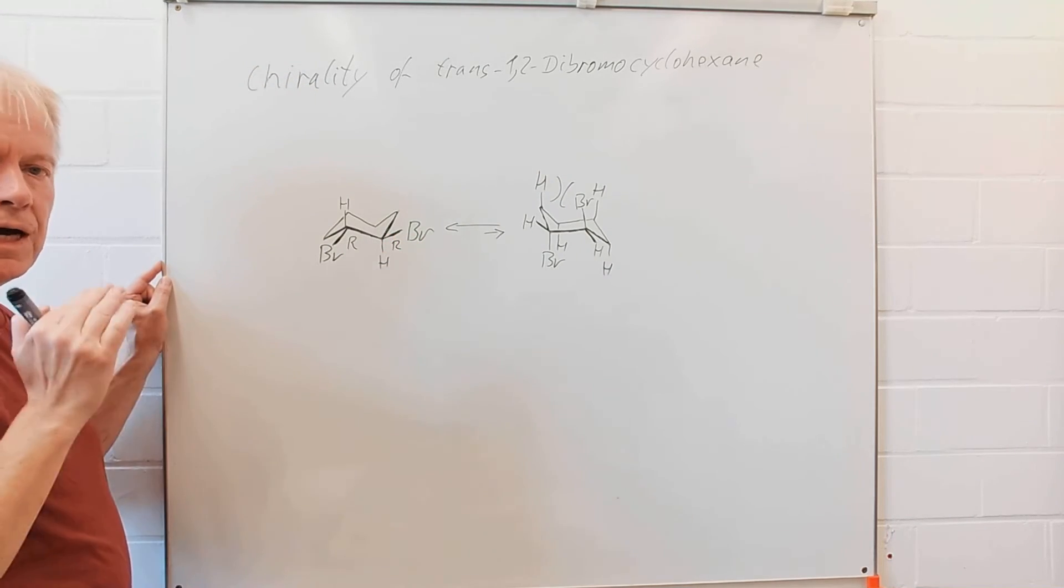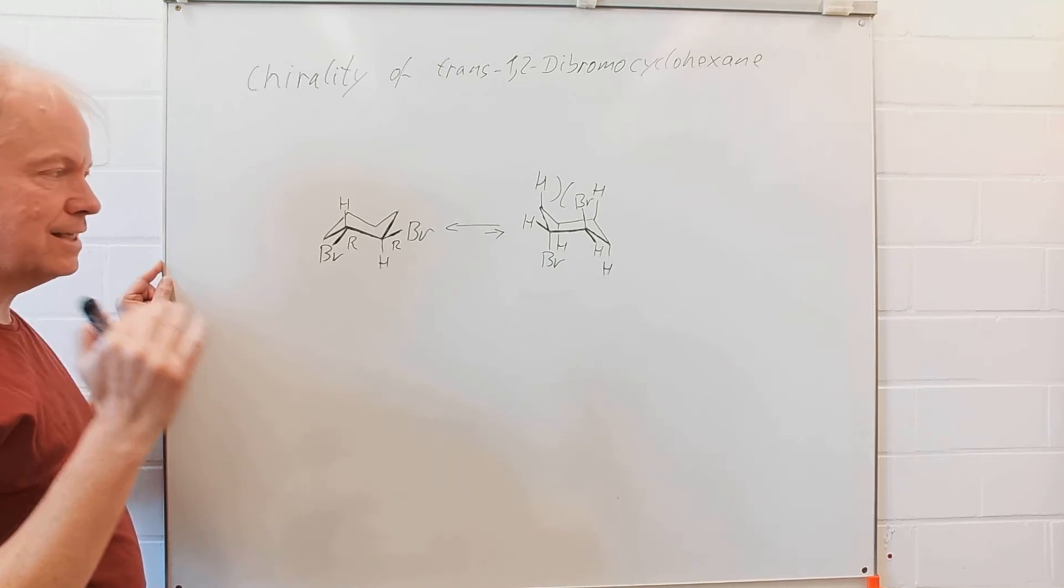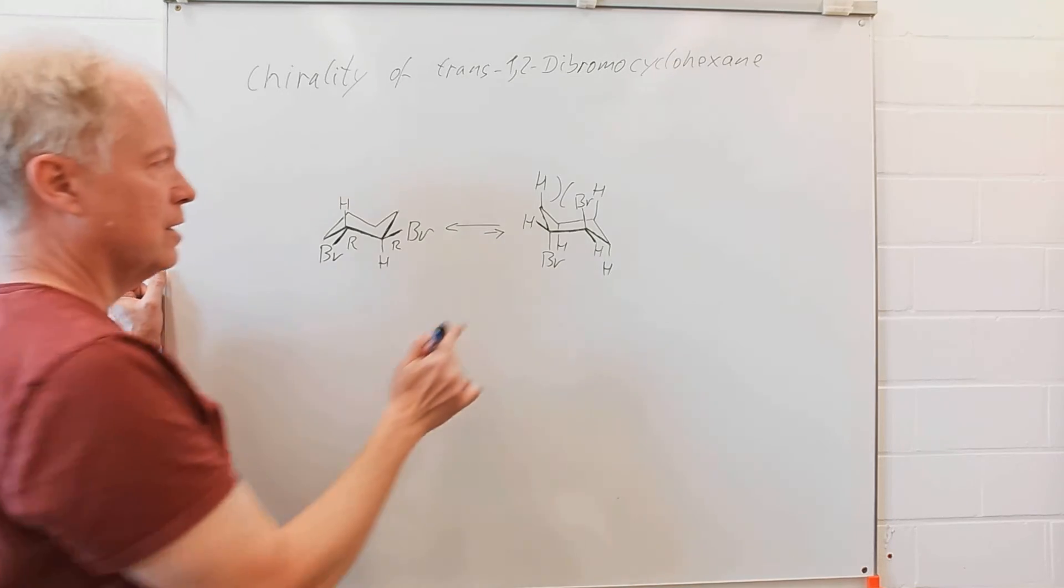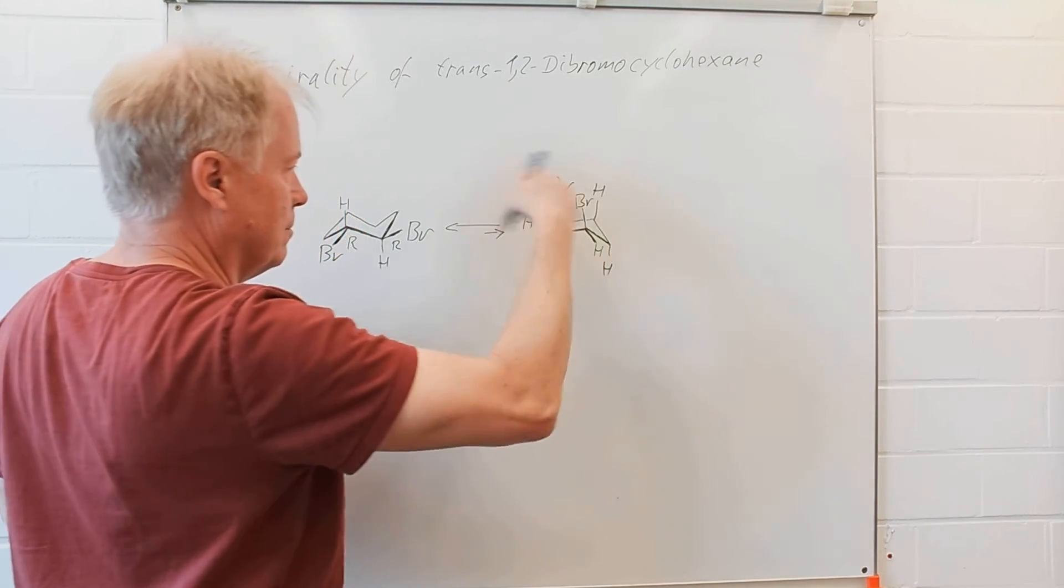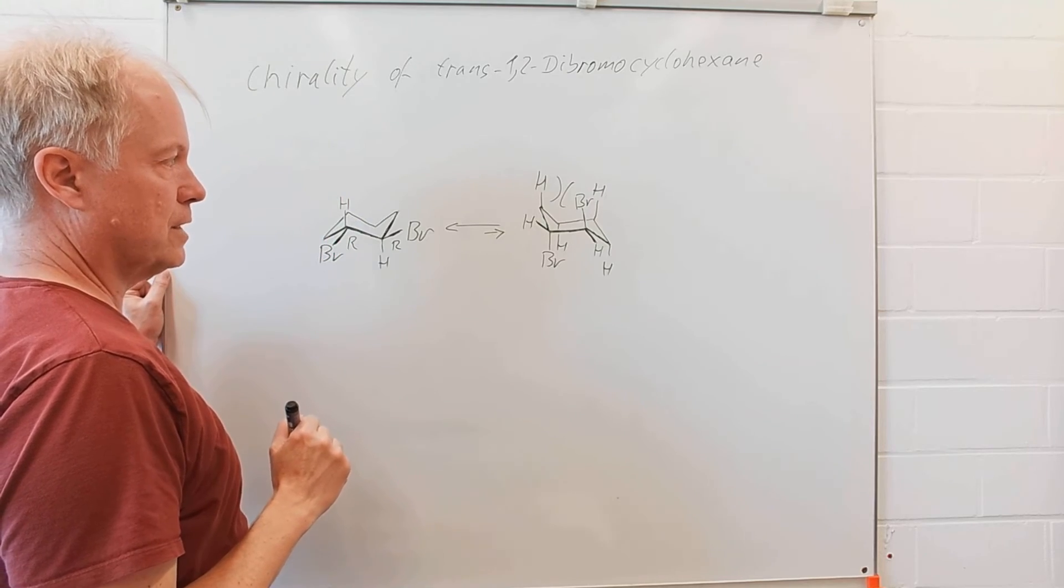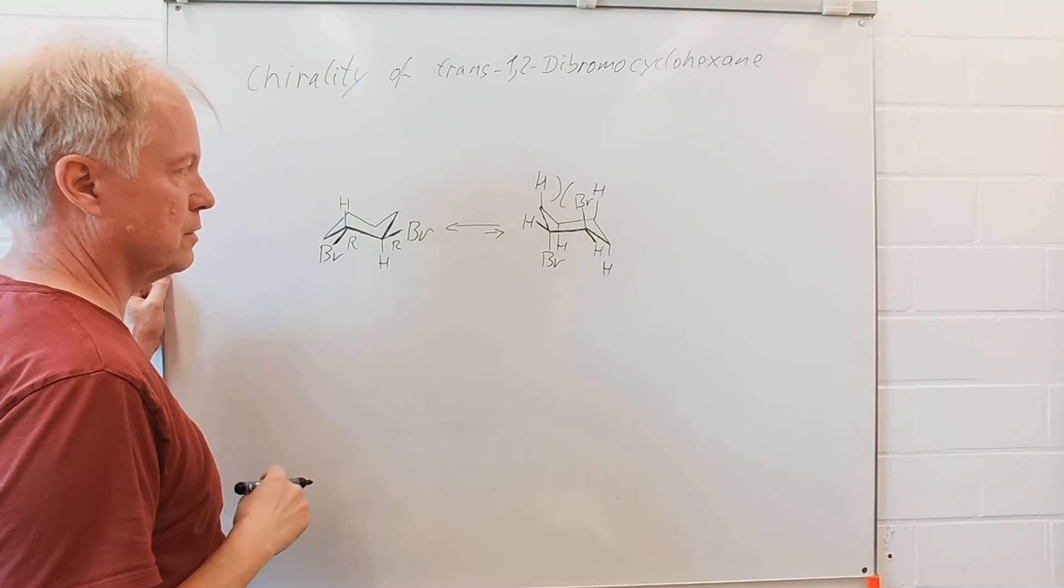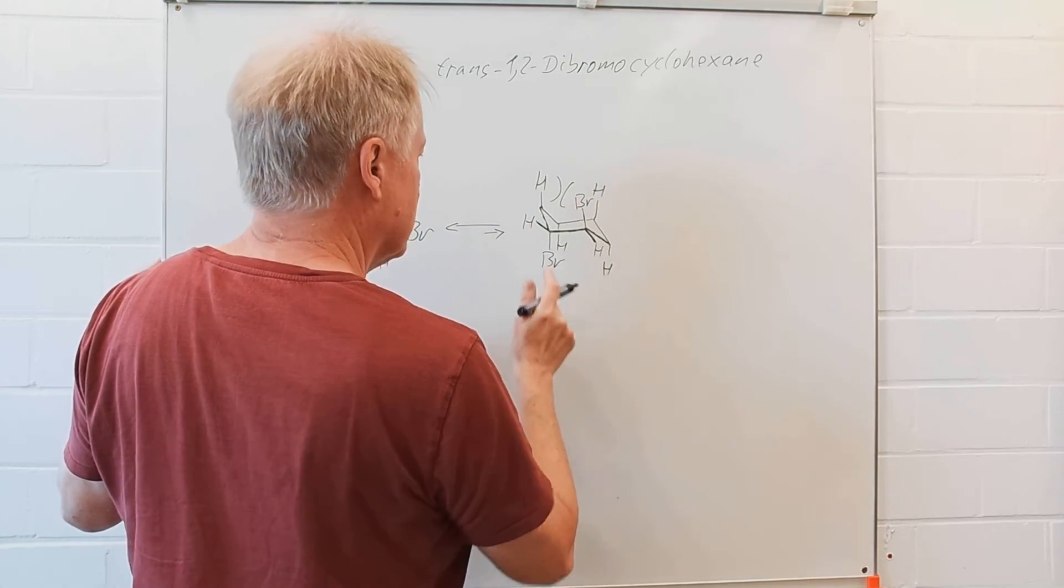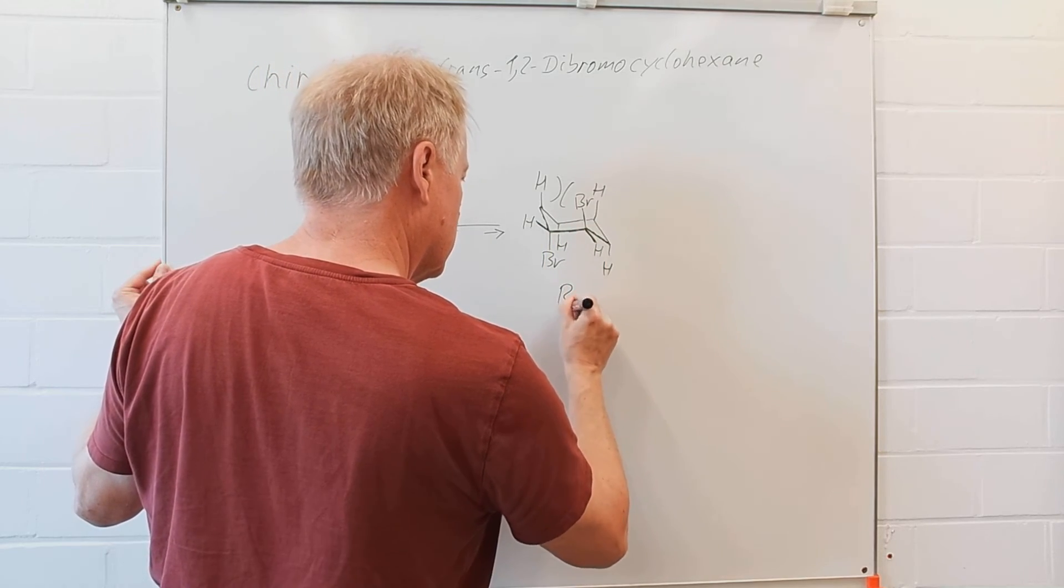This is the RR enantiomer. If we apply the same Cahn-Ingold-Prelog analysis to that one, we also have RR here.